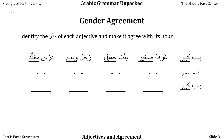In the next example, ghorfa saghir — ghorfa is room, saghir is small — we're going to make the phrase 'a small room.' Remember, Arabic has no word for 'a' or 'an.' Since ghorfa is a feminine singular noun — we can tell this because of its ta' marbuta — saghir must become feminine singular as well. So we add ta' marbuta to make ghorfa saghira, a small room.